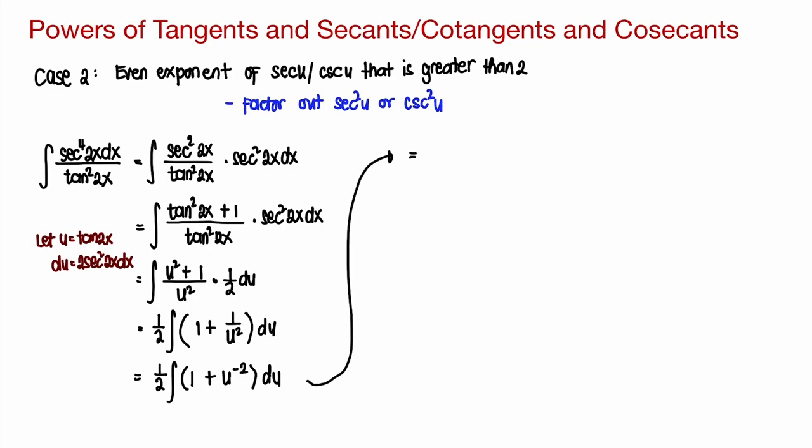And that would now be equal to 1 half. And then we now integrate. So 1 half times u plus u to the power of negative 1 over negative 1 plus c. So that would be 1 half times u minus 1 over u plus c.